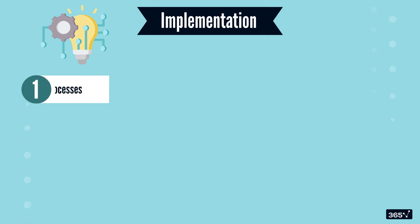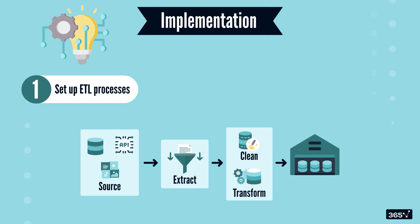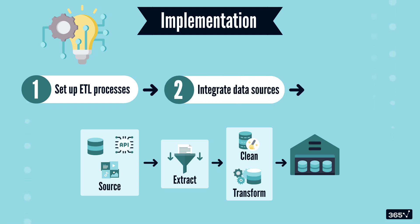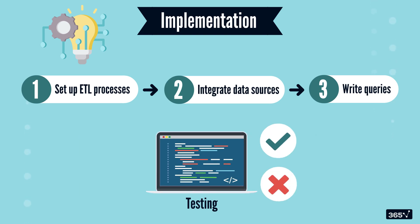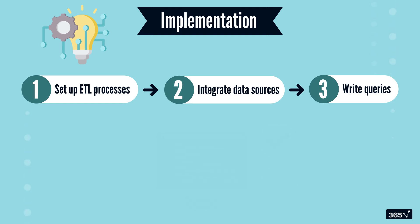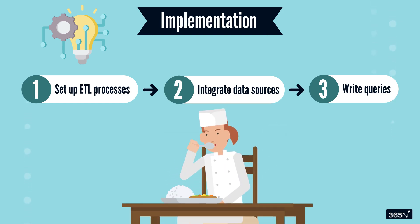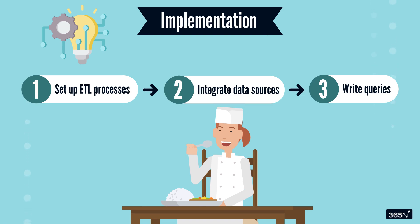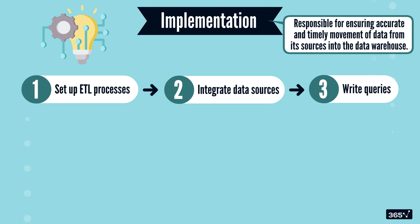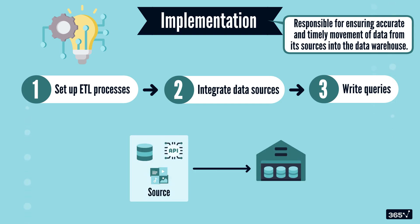Once the design is ready, it's time for implementation. The implementation step involves setting up ETL processes — extract, transform, load — integrating data sources, and writing queries. In addition to building the processing pipeline, testing is extremely crucial. Every piece of data should be validated to avoid errors later. Imagine a chef tasting a dish before serving — it ensures quality. The implementation phase is therefore responsible for ensuring accurate and timely movement of data from its sources into the data warehouse.